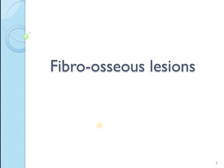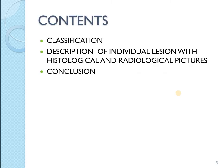Fibro-osseous lesions are a group of diseases that, as the name suggests, contain a fibrous component and an osseous component, and these components are interchangeable. When a lesion is predominantly fibrous, you will have a radiolucent lesion. When it is predominantly osseous, you will have a radio-opaque lesion. That is why most fibro-osseous lesions have a range of radiographic presentations — predominantly radiolucent, a mixed variant, or a radio-opaque variant.